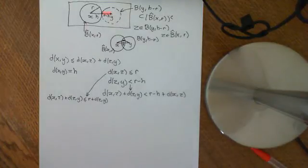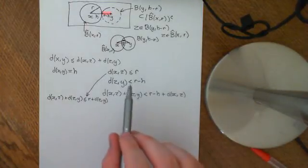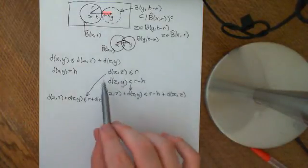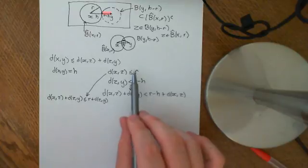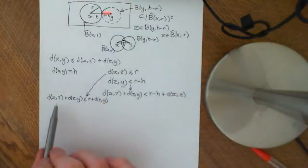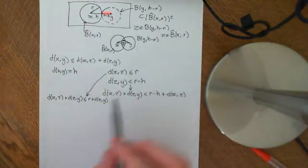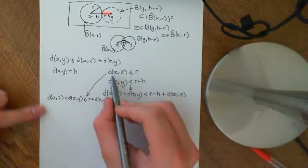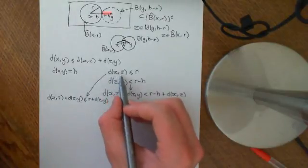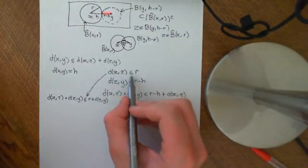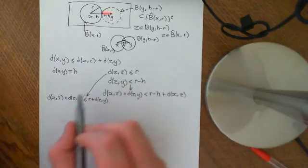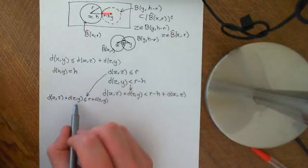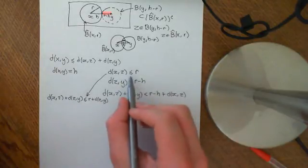So I've figured out what I've done wrong here. What we were trying to do is combine these two inequalities together to get an inequality concerning these. This bit is fine. What I've done here is I've taken this inequality — the distance between x and z is less than or equal to r — and I've said let's add to both sides the distance between z and y, and the inequality still holds true.